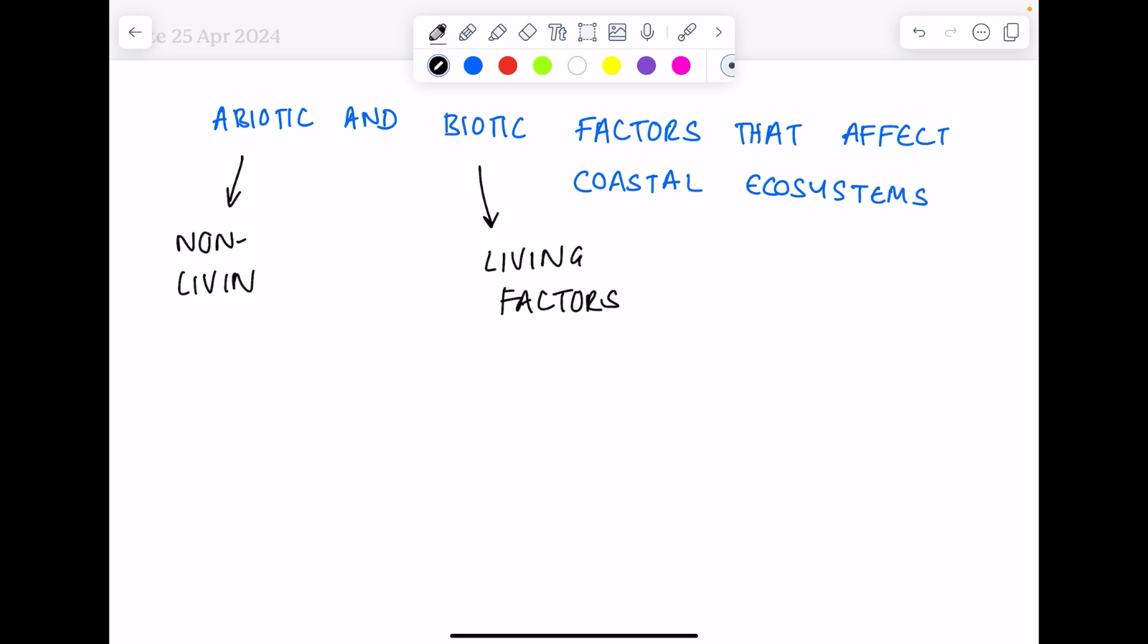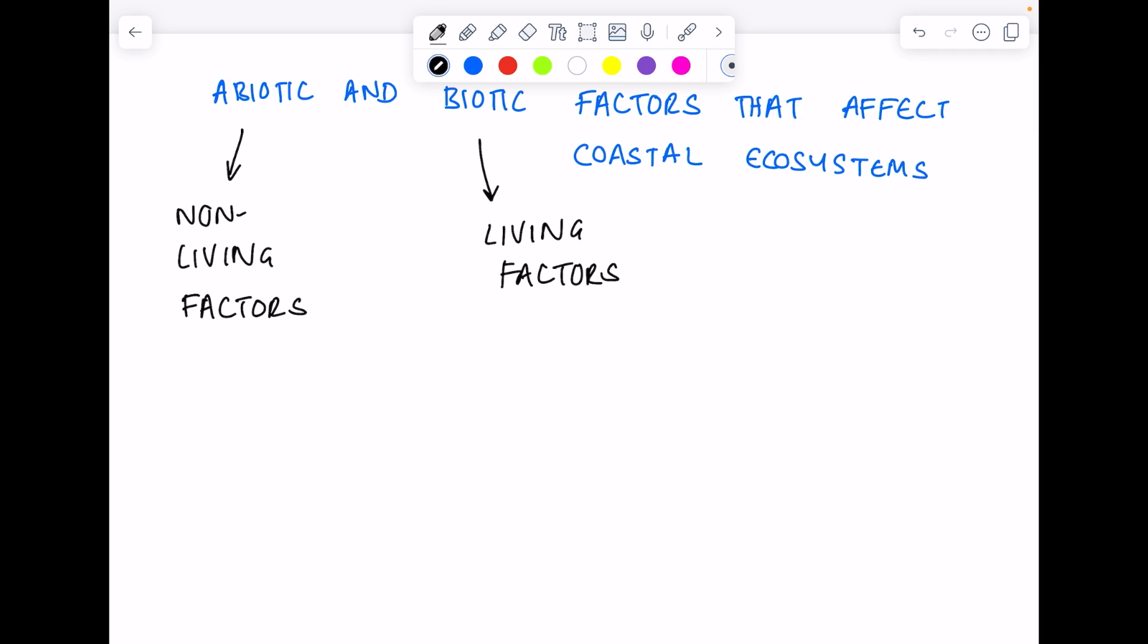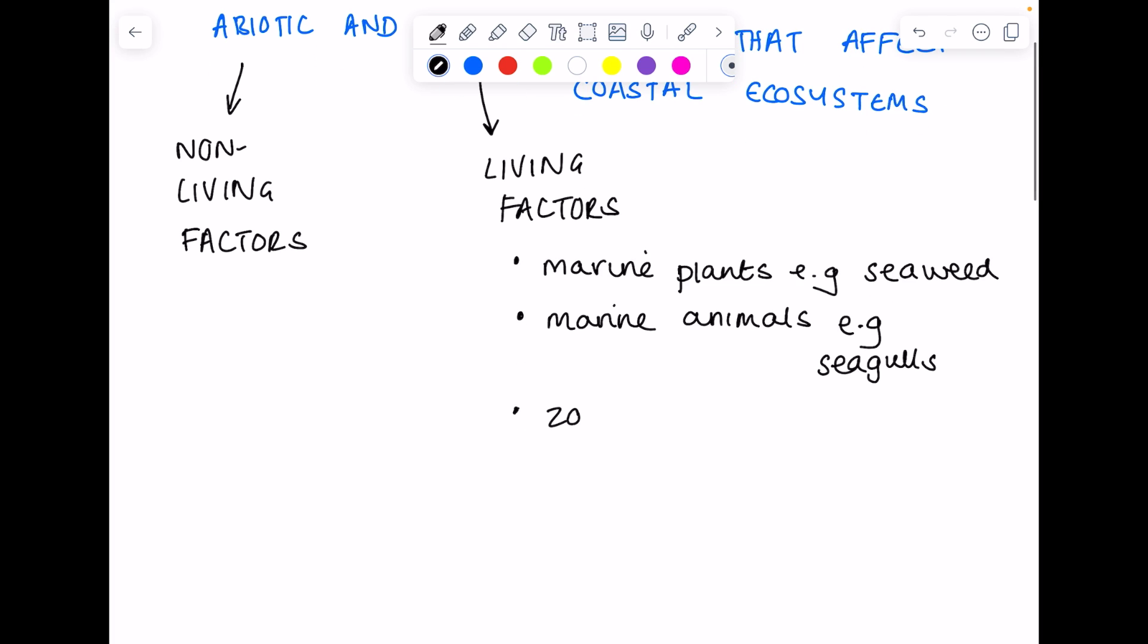Living factors include marine plants, e.g. seaweed, marine animals such as seagulls, and even microscopic organisms like zooplankton.